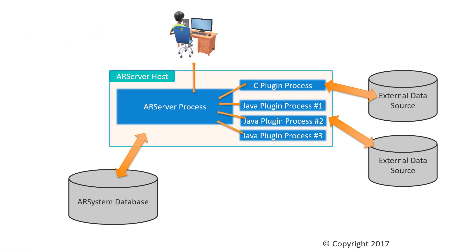Here's a simple diagram showing a high-level overview of how plugins are used in typical workflow. An end user communicates with AR server and performs some sort of API call. That API call can directly access the AR system database, or it can make calls to a C or Java plugin. Those plugins can then perform work which may or may not call upon external data to fulfill the request. Once they fill the request, they communicate back with AR server and the response is provided back to the client.